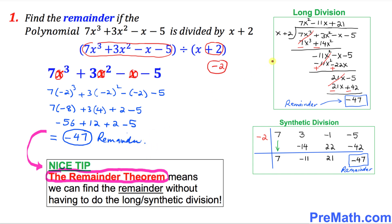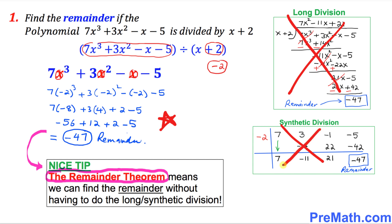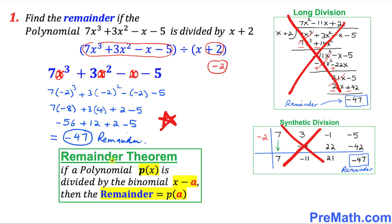Now we have three different options: first one is long division, second is synthetic division, and this simple one is the remainder theorem. Of course we are going to prefer this one, so we no longer need to use the other two methods for finding the remainder. Here is the proper definition: if a polynomial p(x) is divided by a binomial x minus a, then the remainder is going to be equal to p(a).